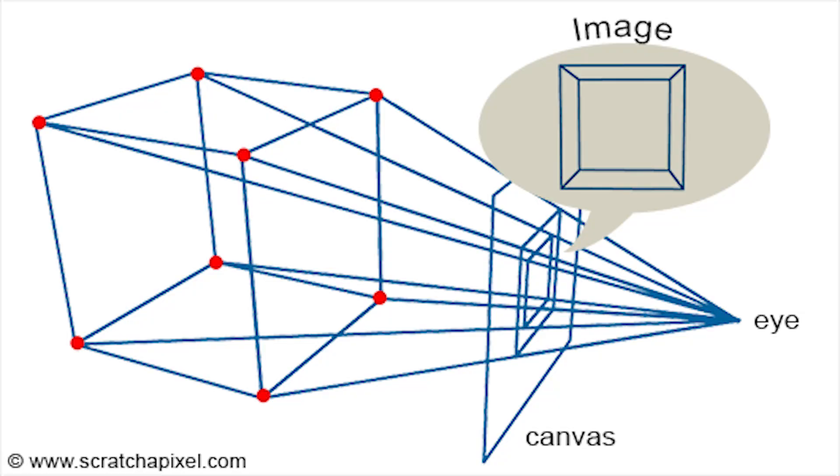Something else I want to expand on are the cues we use to make sense of depth. As described in the last 12 rules video, the world is in three dimensions, but that info gets collapsed into two dimensions when it hits the retina. We don't walk around seeing the world in 2D though — we're able to perceive depth. We can break these depth cues down into monocular, meaning it requires just one eye, or binocular, meaning you need both eyes.